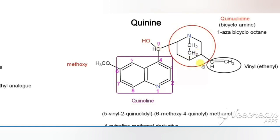The fifth position is connected with the vinyl group — that is the structure of quinine. The rings present in quinine are: one is a quinoline ring, another is a quinuclidine ring, and these two are connected by a hydroxymethyl group. The quinoline has a methoxy group and the quinuclidine has a vinyl group.